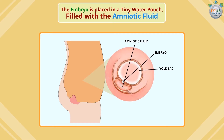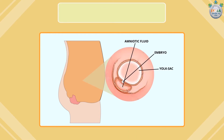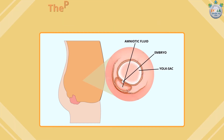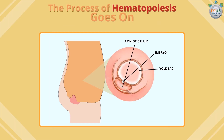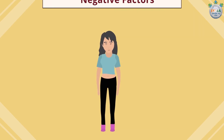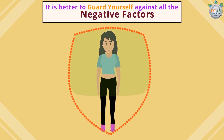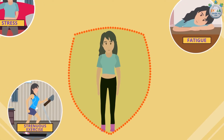The pouch is filled with amniotic fluid. The embryo receives nutrients from the yolk sac and not from the mother's body. The process of hematopoiesis is ongoing, and it is a critical moment — it is better to guard yourself against all negative factors such as stress, fatigue, and strenuous exercise.